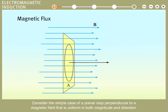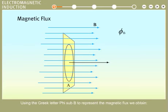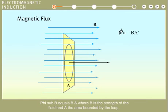Consider the simple case of a planar loop perpendicular to a magnetic field that is uniform in both magnitude and direction. Using the Greek letter phi sub B to represent the magnetic flux, we obtain phi sub B equals BA, where B is the strength of the field and A is the area bounded by the loop.